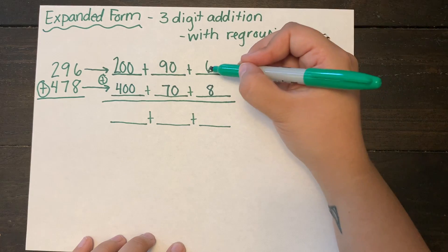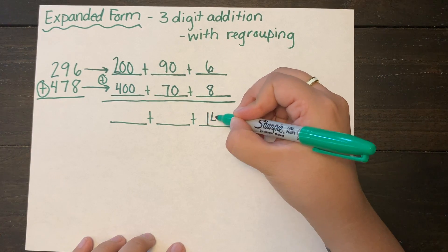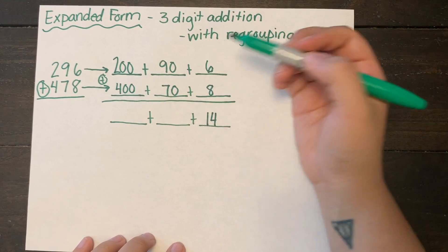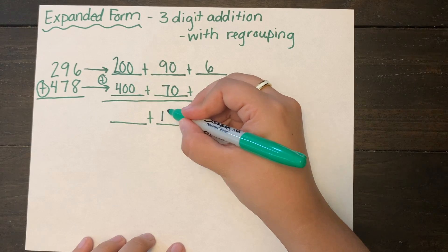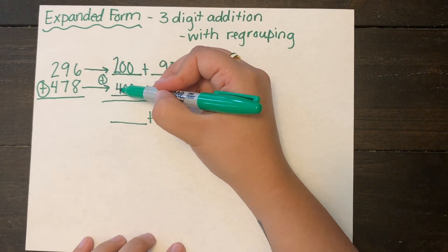So I'm going to add my ones column together first. 6 plus 8 is equal to 14. Next I'm going to look at my tens column and you can skip count by tens or you can use quick pictures to help you. But the answer was 160.